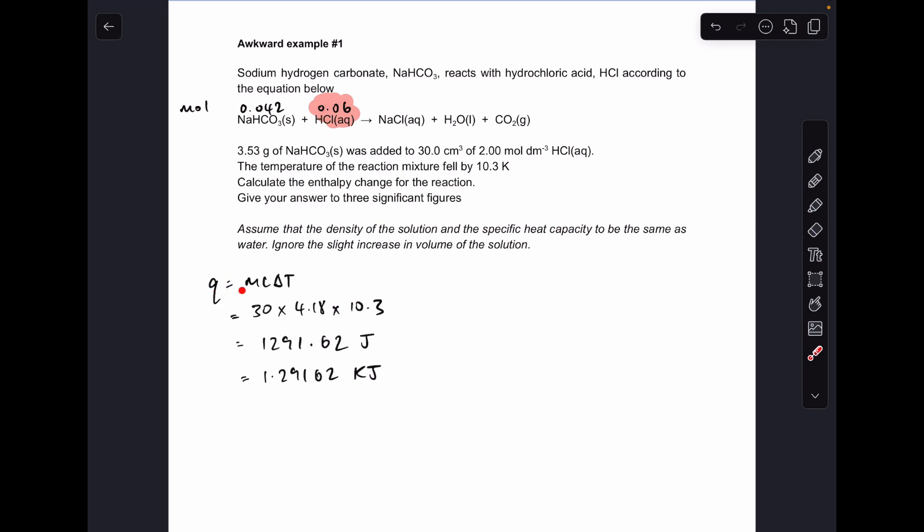So we're calculating Q first. M, C, delta T. So M now is 30. It's the mass of the solution, not the mass of the sodium hydrogen carbonate. That would be a common mistake. So the solution has a mass of 30 grams. Again, we've got this assumption, density of the solution and the specific capacity to be the same as water. And we're also told again to ignore the slight increase in volume of the solution. So 30 it is. 4.18 for C and 10.3 is the temperature change. So that gives 1291.62 joules, which in kilojoules is that.